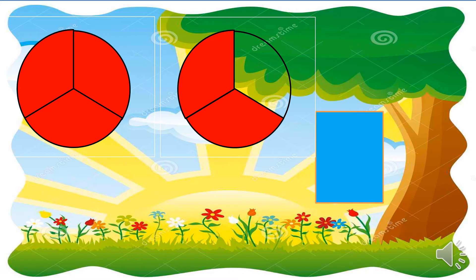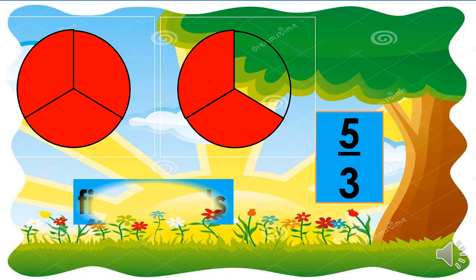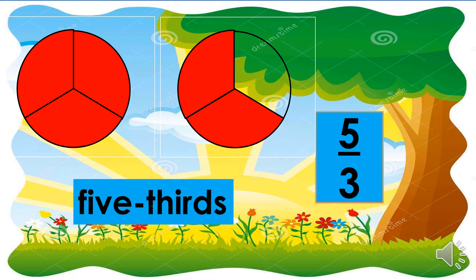There are five shaded parts in these two circles, so five should be written as the numerator. And since each is divided into three equal parts, three is the denominator. The fraction word is five-thirds.